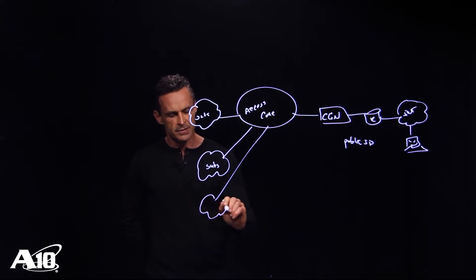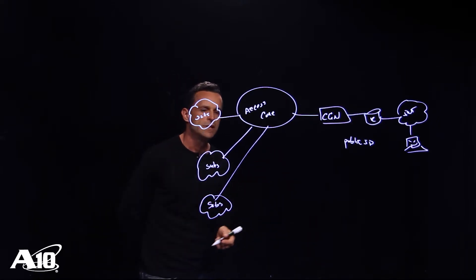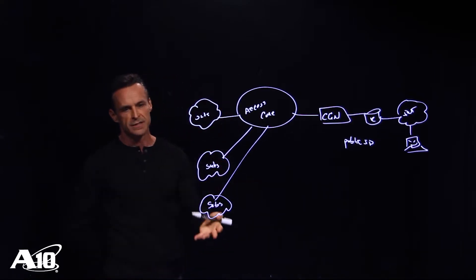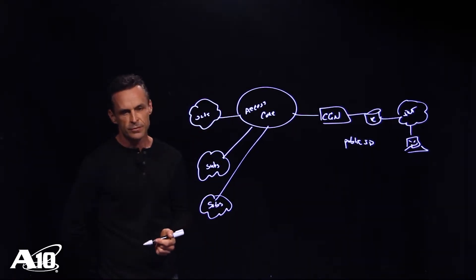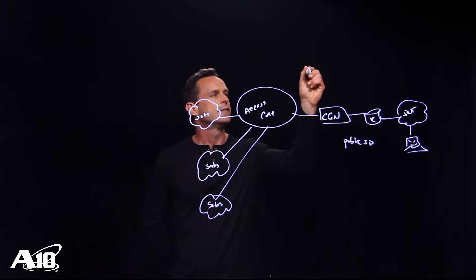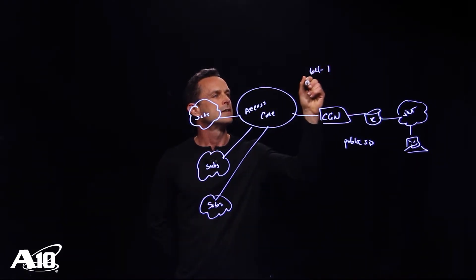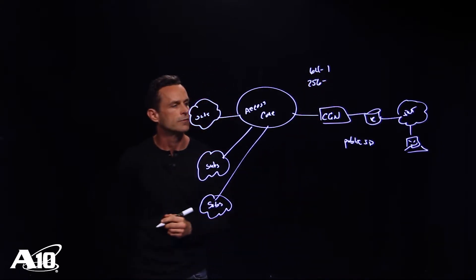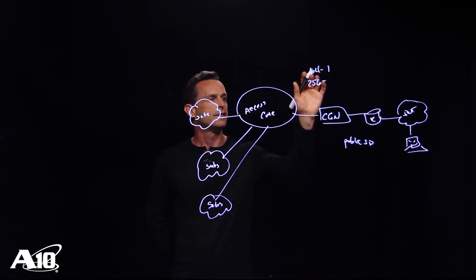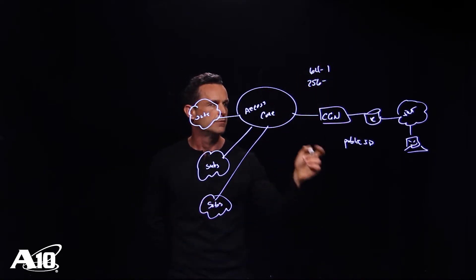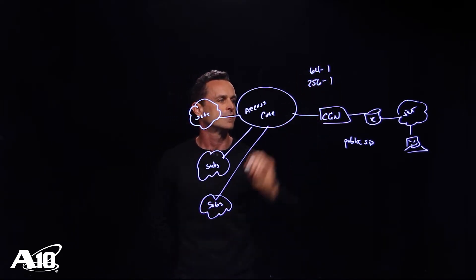So when a volumetric attack comes into our CGN device we have this distribution of the attack across multiple subs. In some cases, depending upon the service provider and their ability to use their current IPv4 infrastructure for NATing, we may see a 64 to 1 subscriber to IP ratio or even as high as 256 to 1.